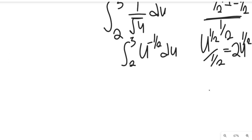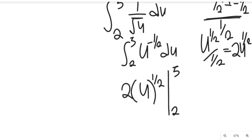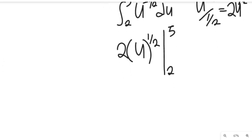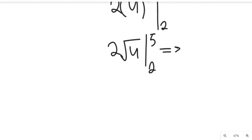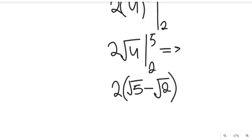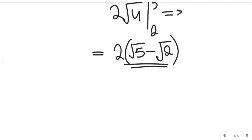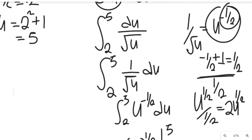So we now evaluate 2 times the square root of u, with limits from 2 to 5. This gives us 2 times, in brackets, the square root of 5 minus the square root of 2. That is our final result for the first integral using the substitution method — the same result you would get using the back substitution method.